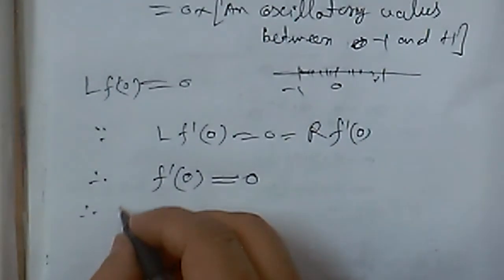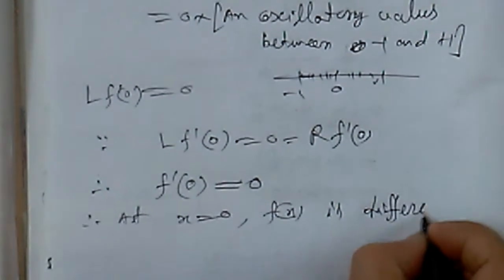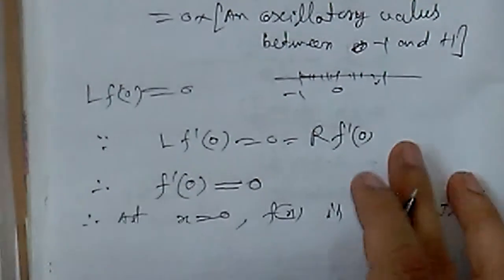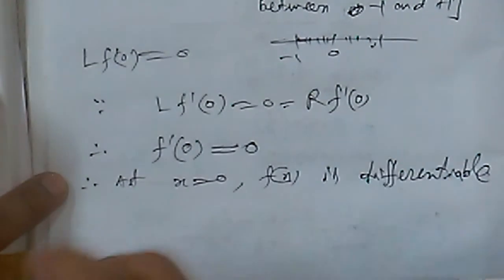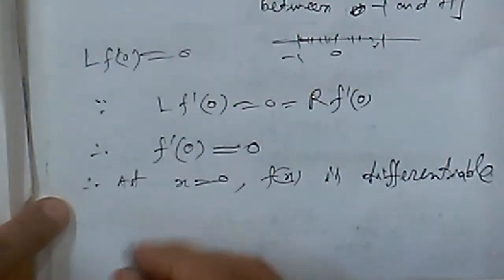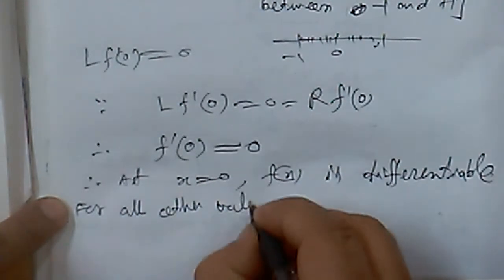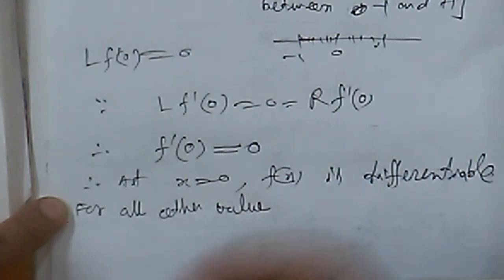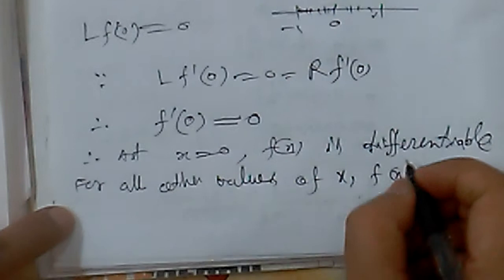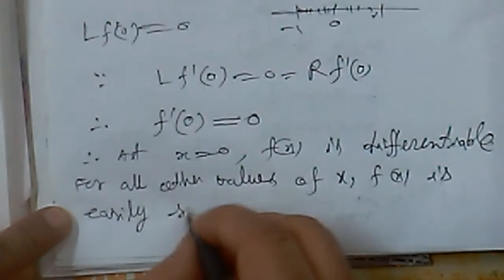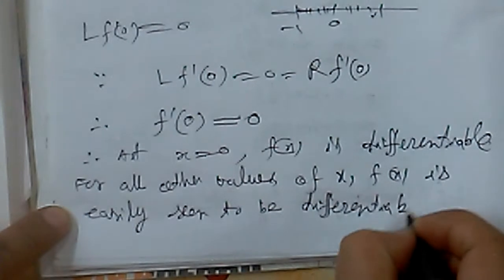So we can say that at x = 0, f(x) is differentiable. The derivative value at zero equals zero. Zero was the only critical point where there was a chance the function might not be differentiable. For all other values of x, we can easily show differentiability.